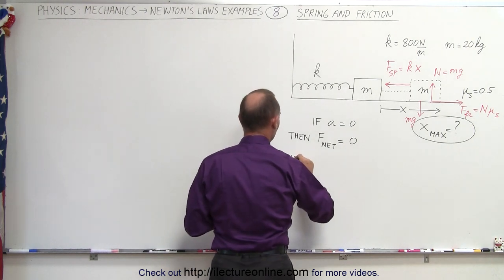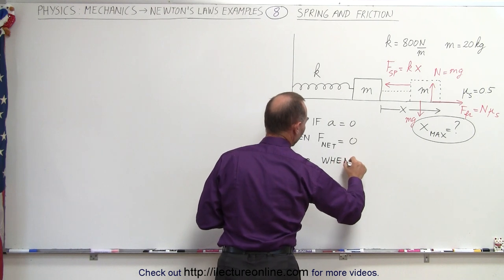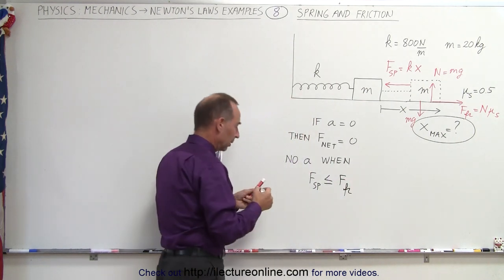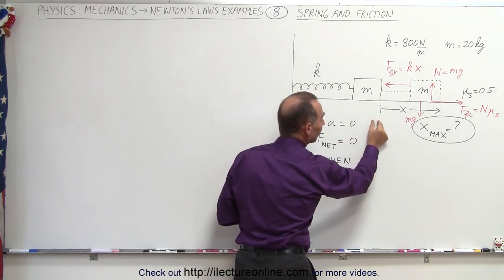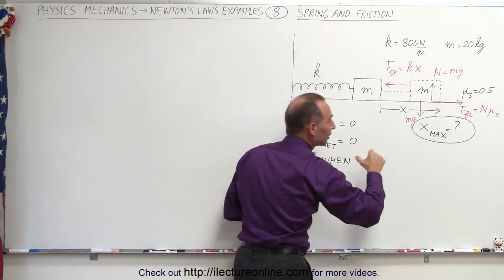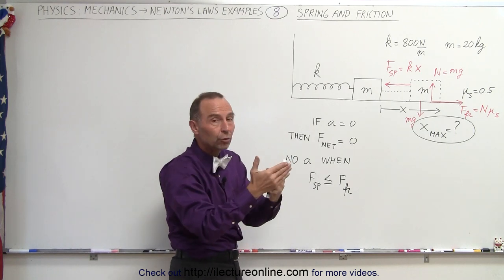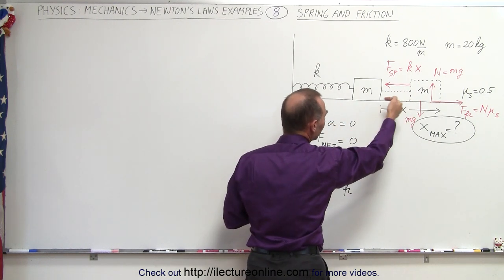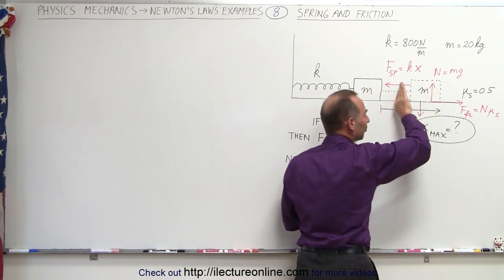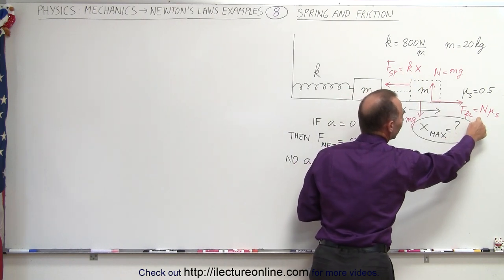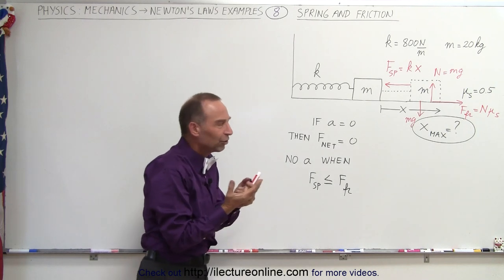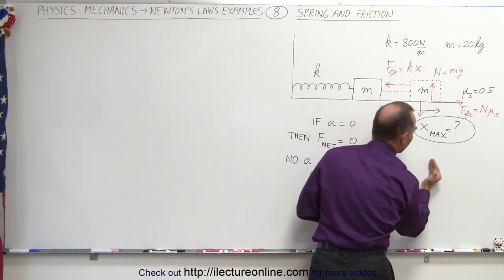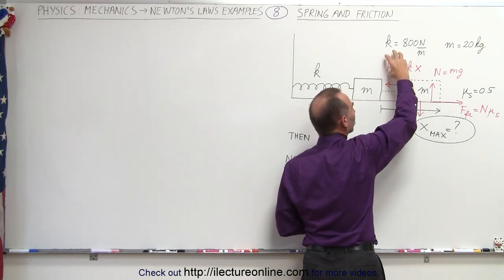There is no acceleration when the force of the spring is less than or equal to the force caused by friction. If you pull it out just a little bit, the spring force will be very small, and the friction force will be small as well. The friction force can only be equal to or smaller than the force applied — as you pull the block further outward, the spring force increases, and the friction force simply responds and matches it. The friction force is a reactionary force.